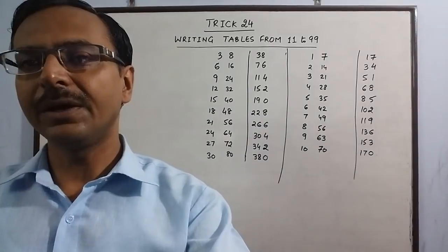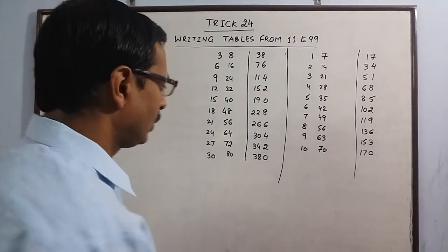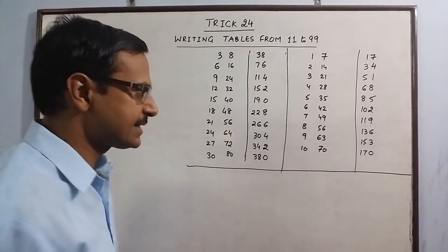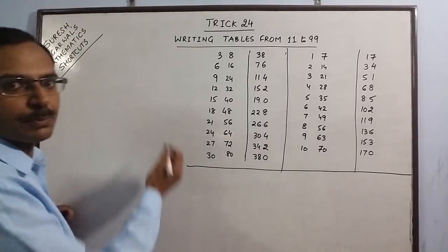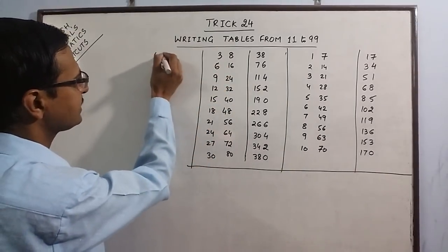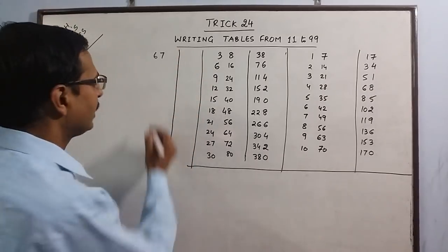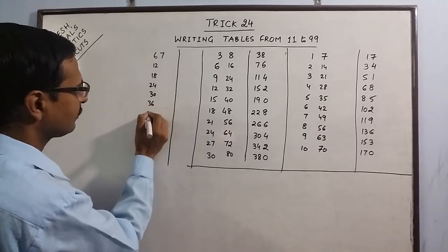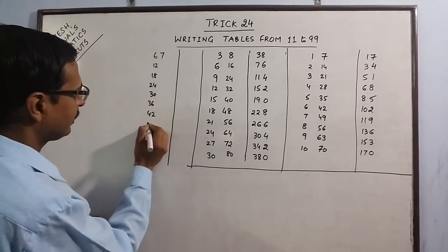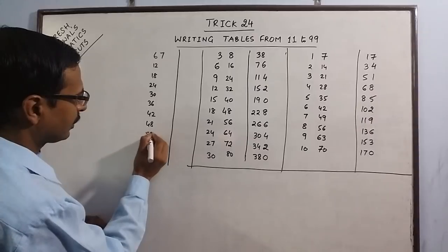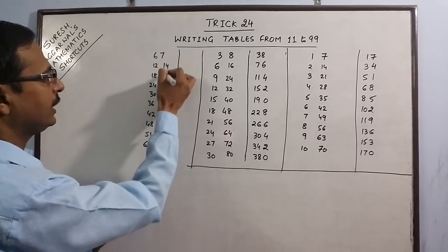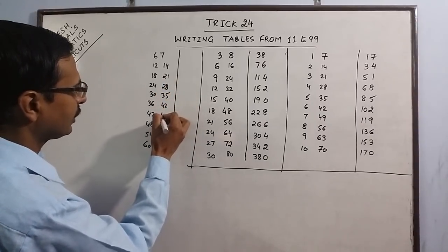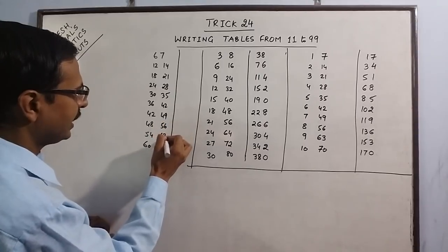Now once we have learnt this, we need to carry forward this method to slightly higher numbers. I will take the example of 67. We have 6 and 7. I will write the table of 6: 6, 12, 18, 24, 30, 36, 42, 48, 54, 60. Then the table of 7: 7, 14, 21, 28, 35, 42, 49, 56, 63, 70.